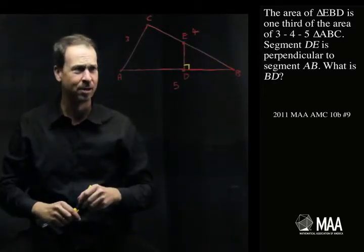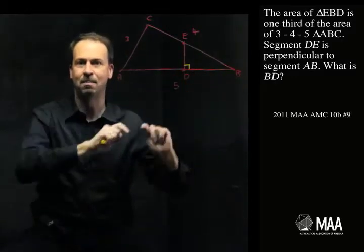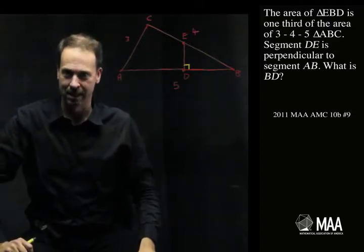Now what's the actual question? What is BD? BD is this length here. So I want to find the length of the base of the small triangle. What to take in there?